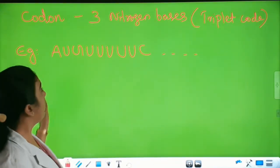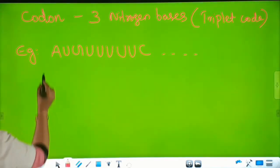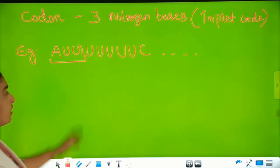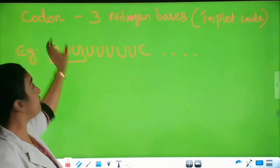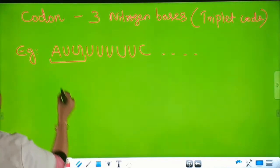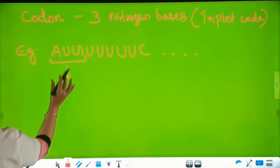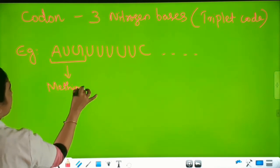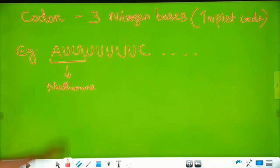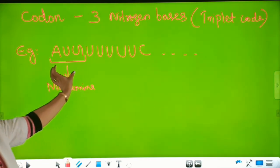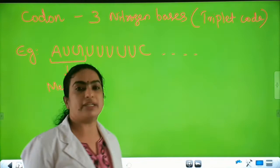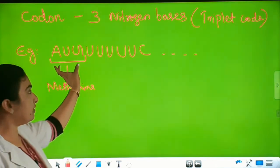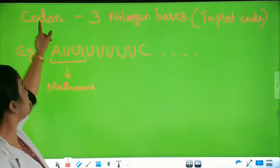The sequence is going on for protein synthesis. The first three nitrogen bases form a codon. So three nitrogen bases together form a codon, and that codes for a particular amino acid — that is methionine. As it has three nitrogen bases, this codon is known as a triplet code. Is it clear about codon and triplet code?